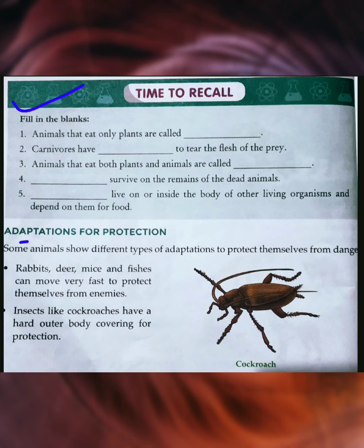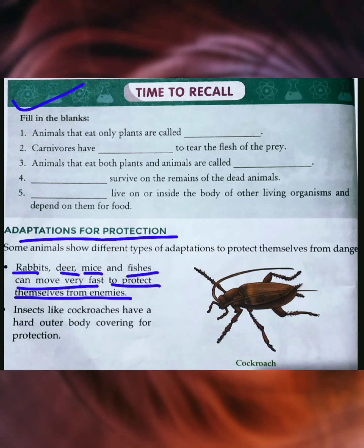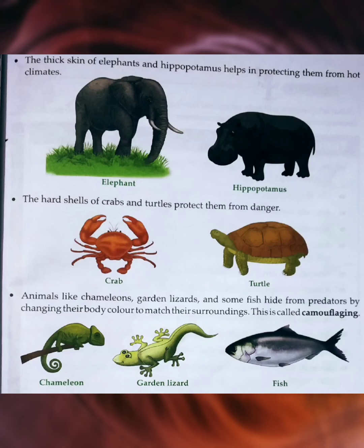Now let's move to adaptation for protection. To protect themselves from dangers, some animals show different types of adaptations. For example, rabbit, deer, mice, and fishes can move very fast to protect themselves from enemies. Insects like cockroaches have a hard outer body covering that protects them from dangers.